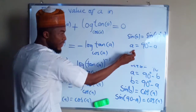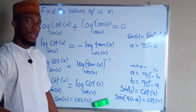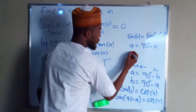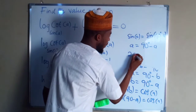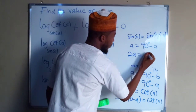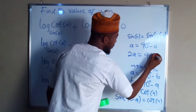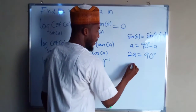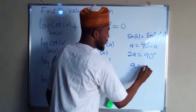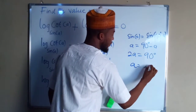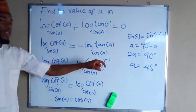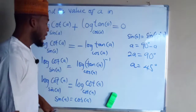If we bring this term to the left-hand side it becomes positive, so we have 2A equals 90 degrees. Therefore, A equals 45 degrees. The value of A is 45 degrees.